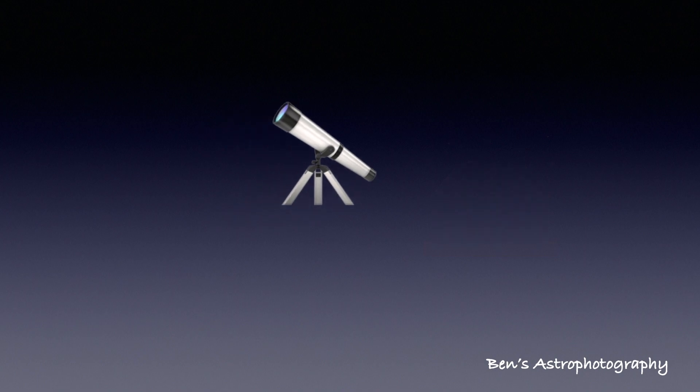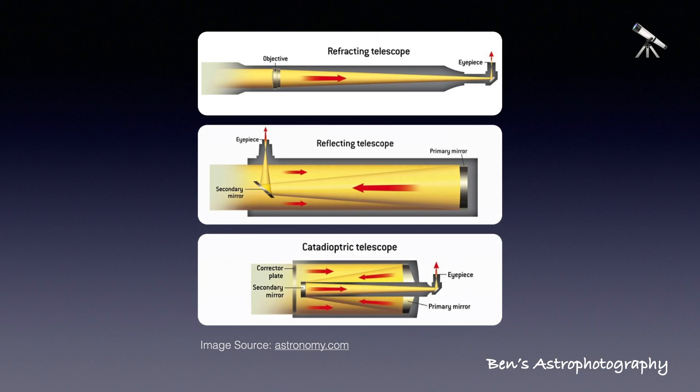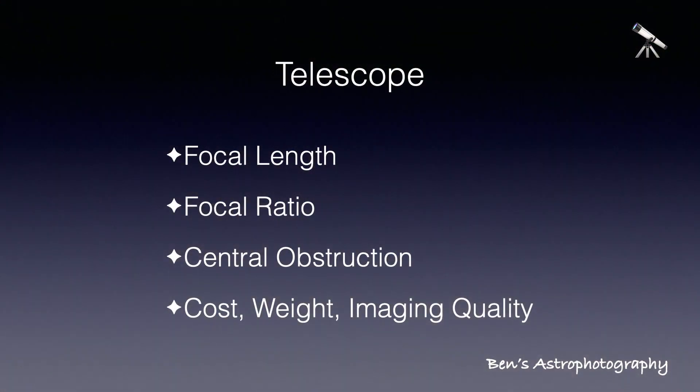They all go through refractors, Newtonians, and then Schmidt-Cassegrains, etc. But I am going to take a different approach here. I will put all types of telescopes together and discuss only four factors.